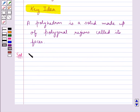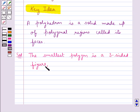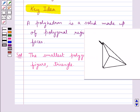We already know that the smallest polygon is a three-sided figure, that is, a triangle. Let's have a look at this figure.